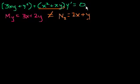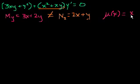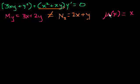We called that mu. In the last video, we actually solved for mu. We said if we multiply both sides of this equation by mu of x equals x, it should make this into an exact differential equation. It's important to note there might have been a function of y, or a function of x and y, that would also make it exact. But our whole goal is just to make this exact, so it doesn't matter which integrating factor we pick.